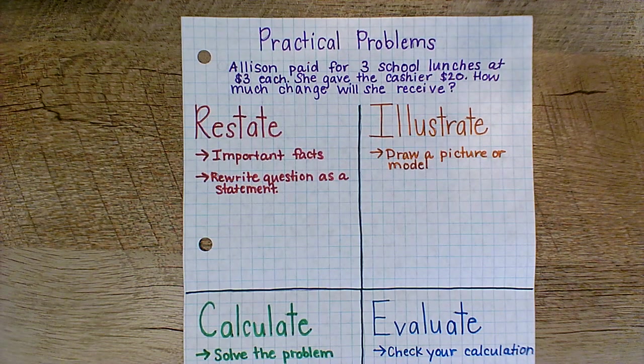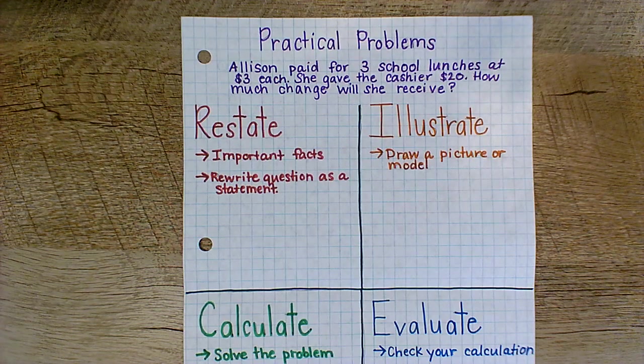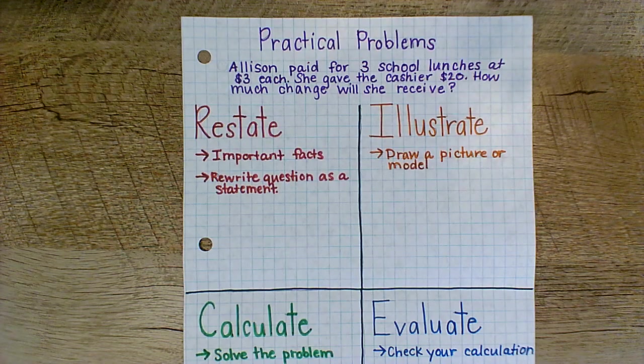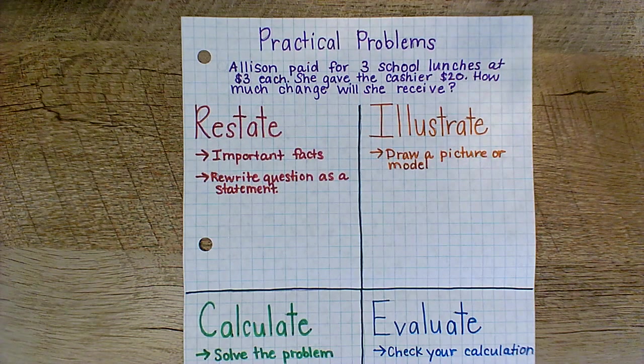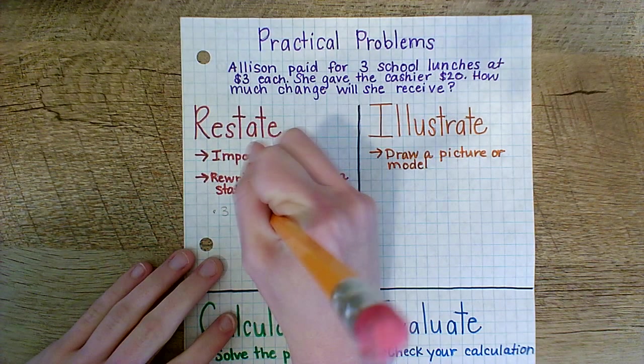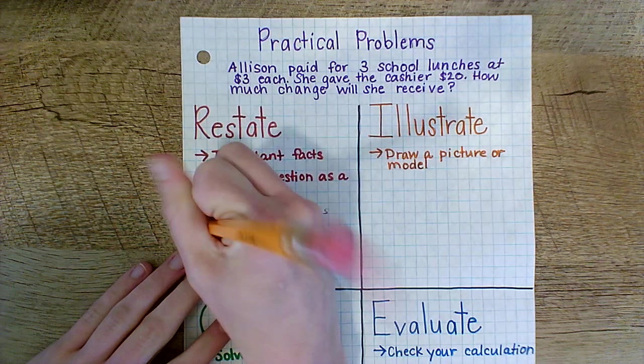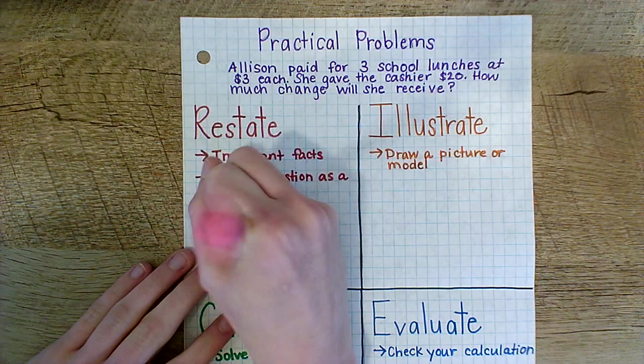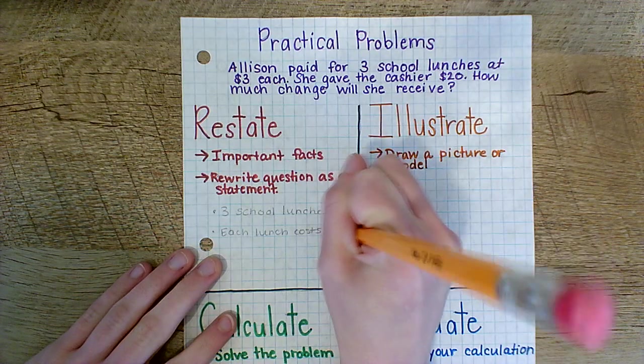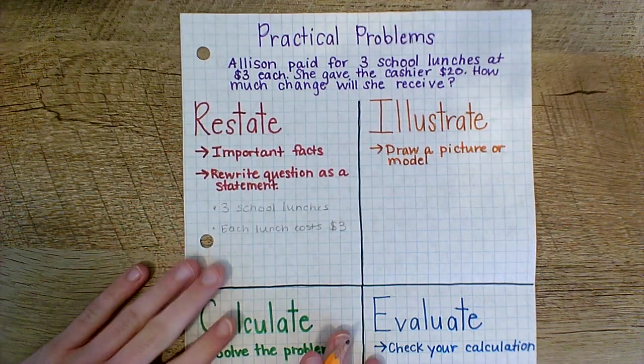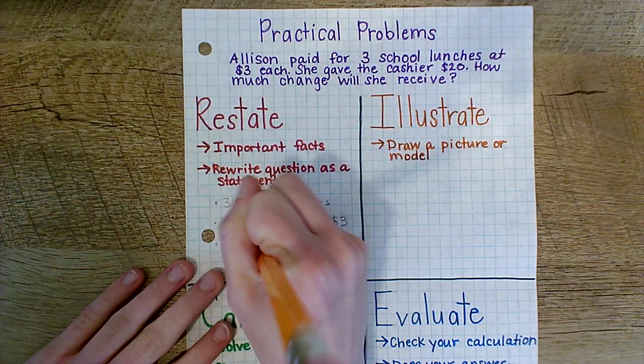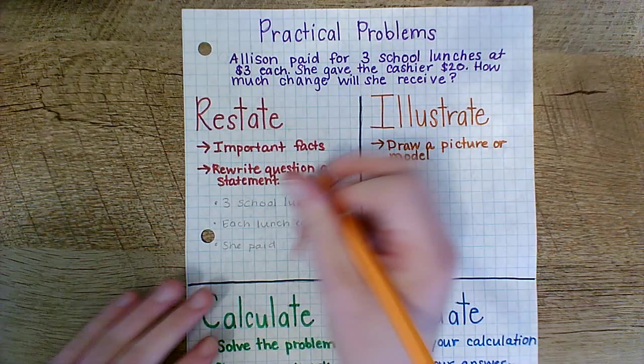So when we're following the Rice Method, our first step is to restate the important facts and rewrite the question as a statement. So let's go through the problem. What are the important facts that we already know? Well, we do know that she bought three school lunches. And we know that each lunch costs three dollars.